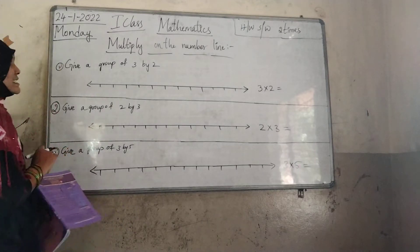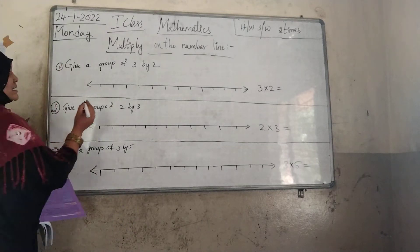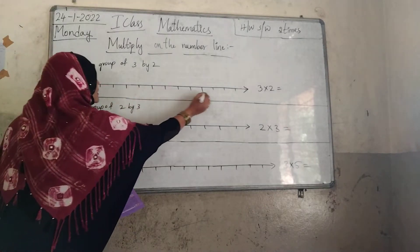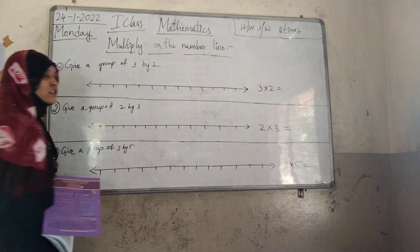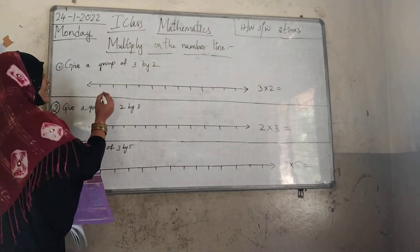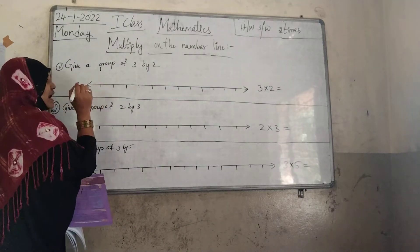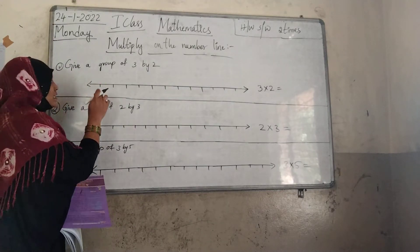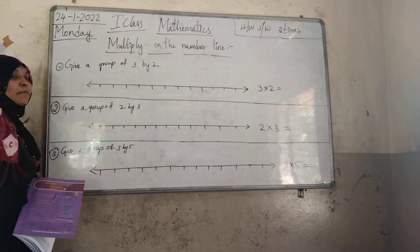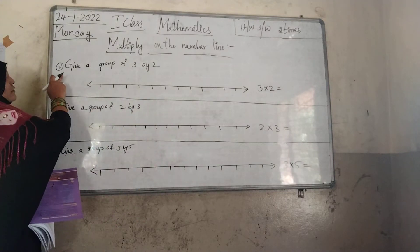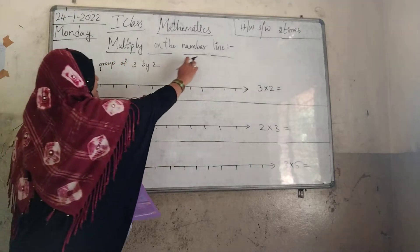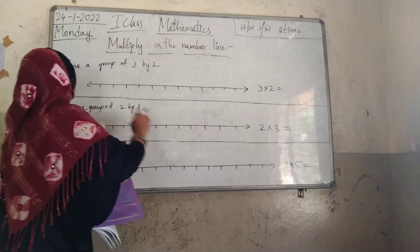Do you know what is a number line? See this line — this is a line. Now I am going to write numbers here, and then this will be called a number line. Today's topic: multiply on the number line.